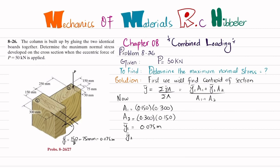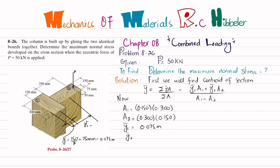y₂̄ is the distance from the reference line to the mid of board two. The half of board two is 150 mm, and board one contributes another 150 mm, so y₂̄ = 150 + 150 = 300 mm = 0.3 m.